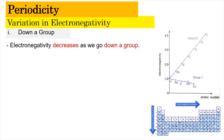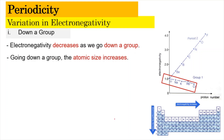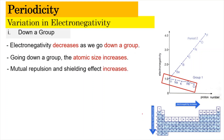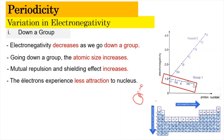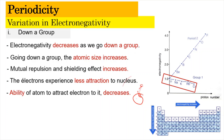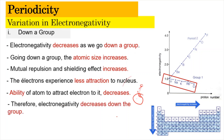For electronegativity down the group, electronegativity decreases. This is because down the group, the principal quantum number increases. When the principal quantum number increases, there are more electrons present to shield the valence electrons, and the atom becomes further and further away from the nucleus, making it more difficult to accept electrons. Going down a group, atomic size increases, causing greater repulsion between electrons. As a result, there is less strong attraction between the electrons and the nucleus, and the atom will have a lesser ability to attract electrons towards itself. Hence the electronegativity decreases down the group.